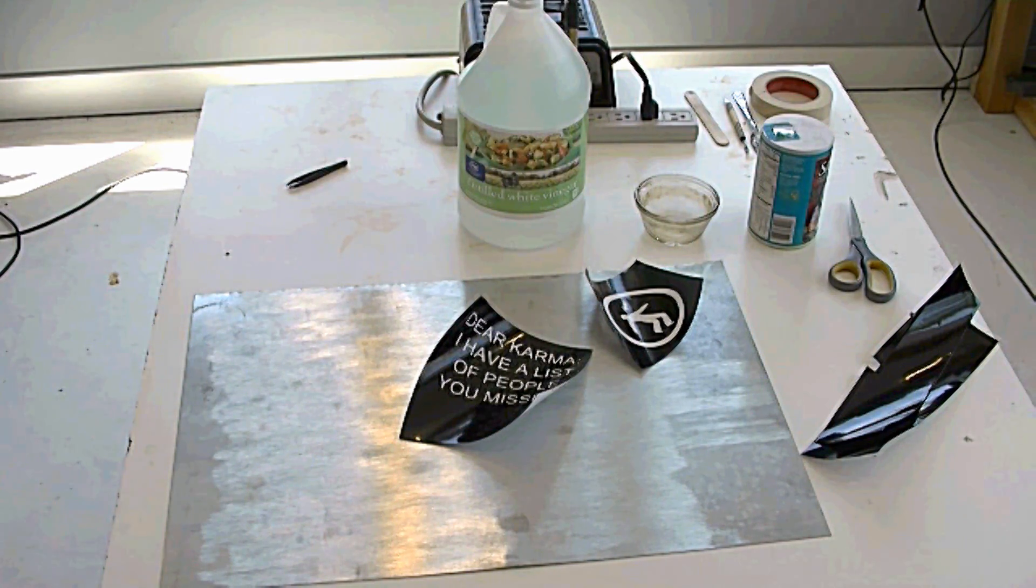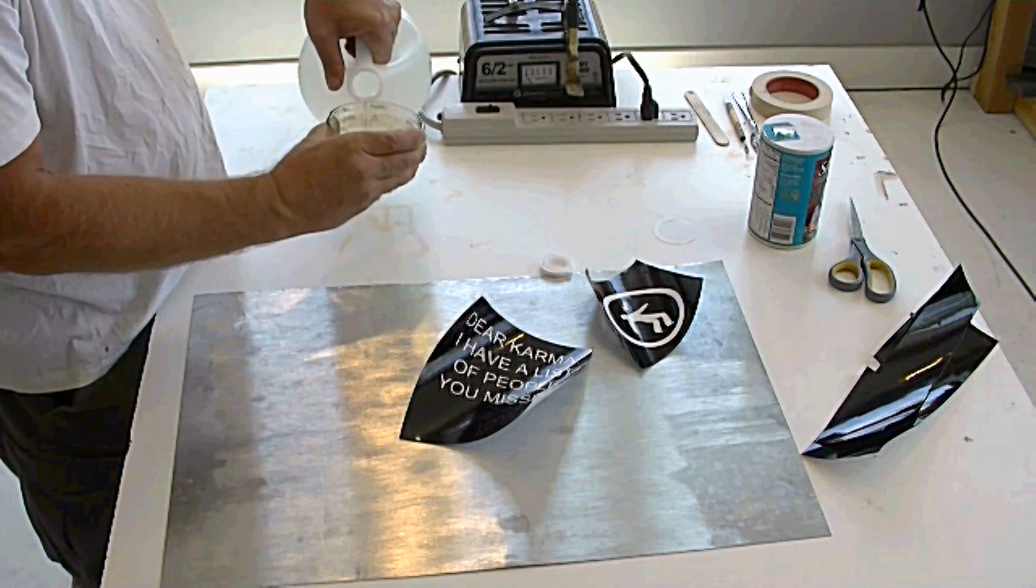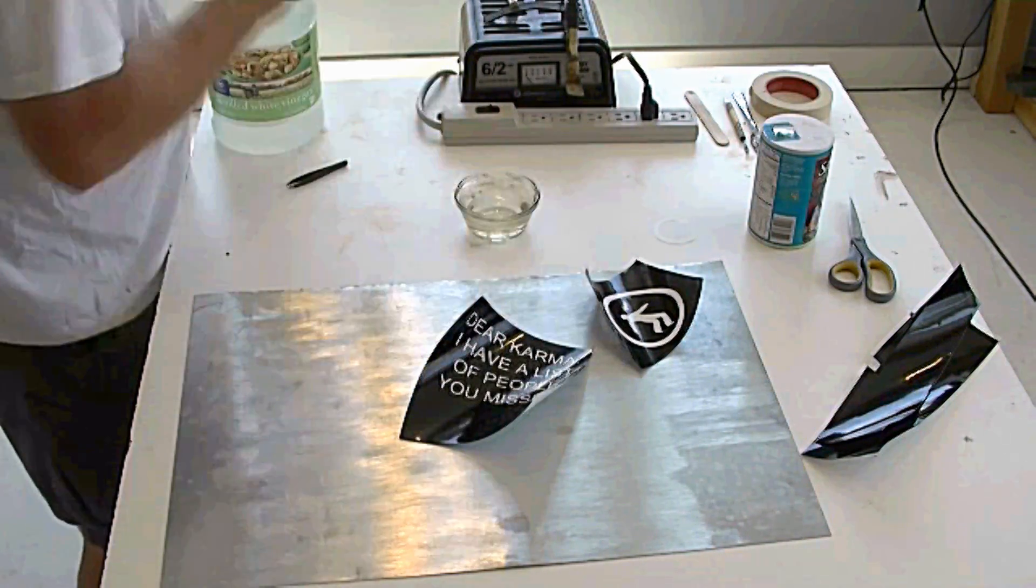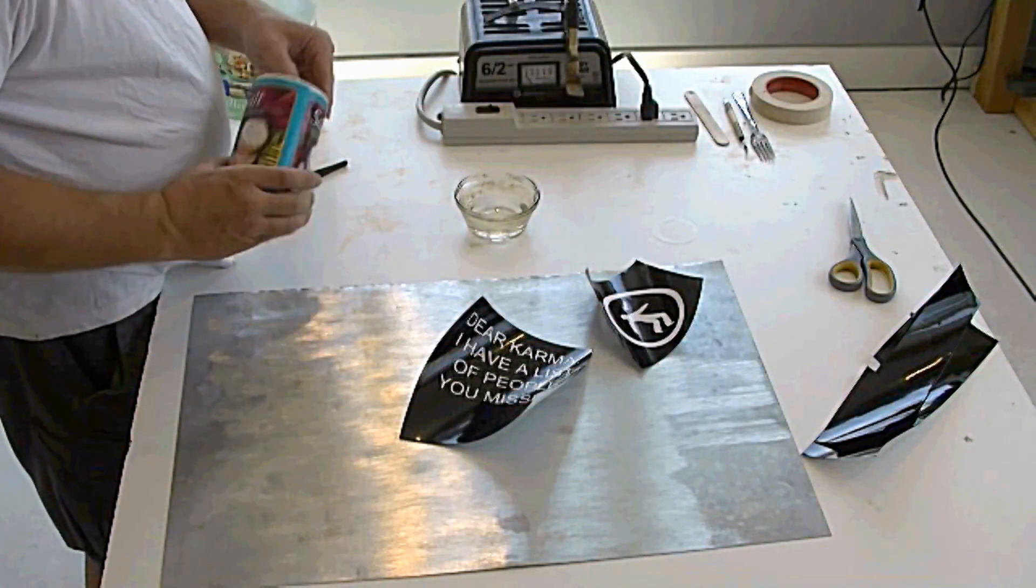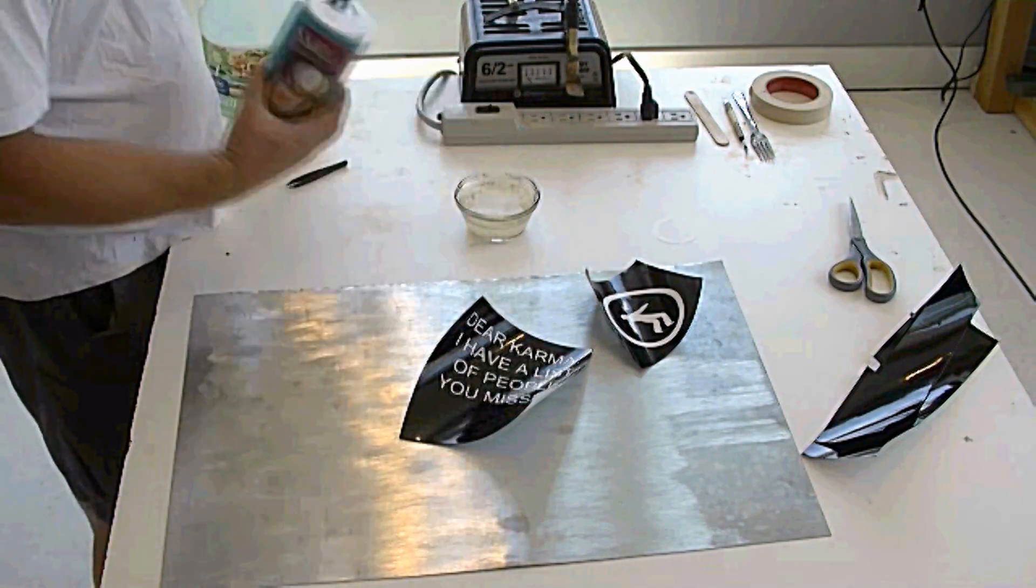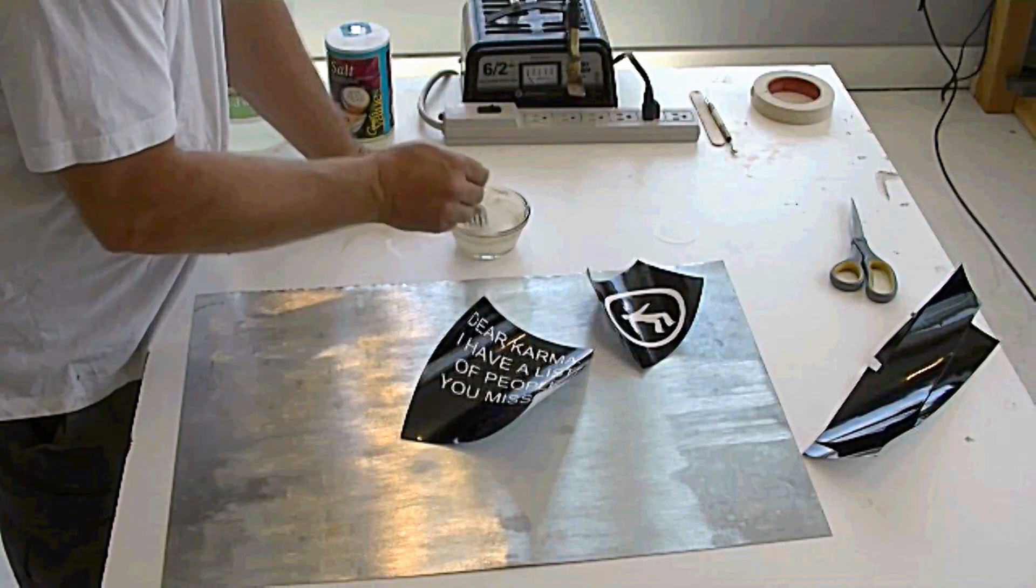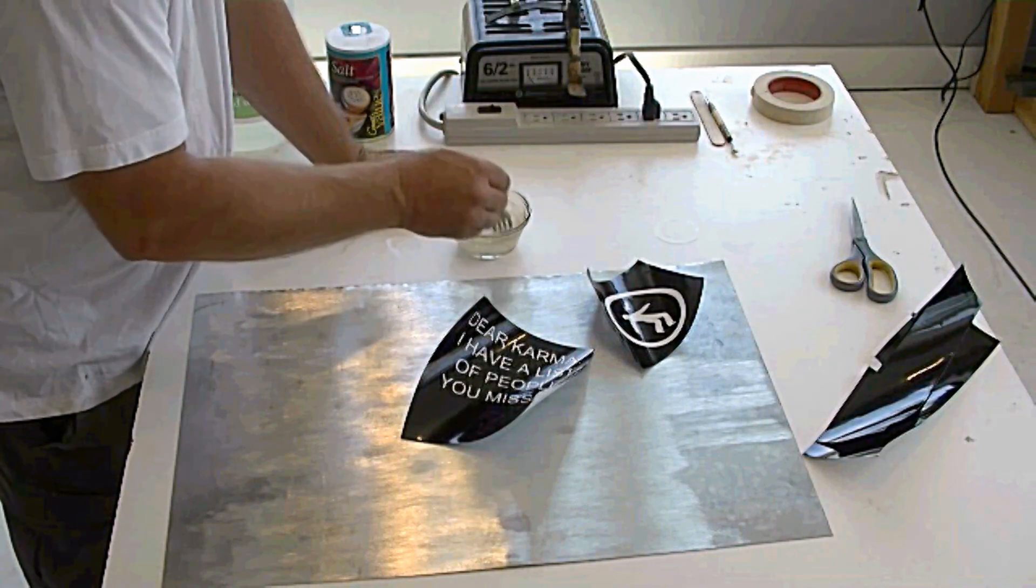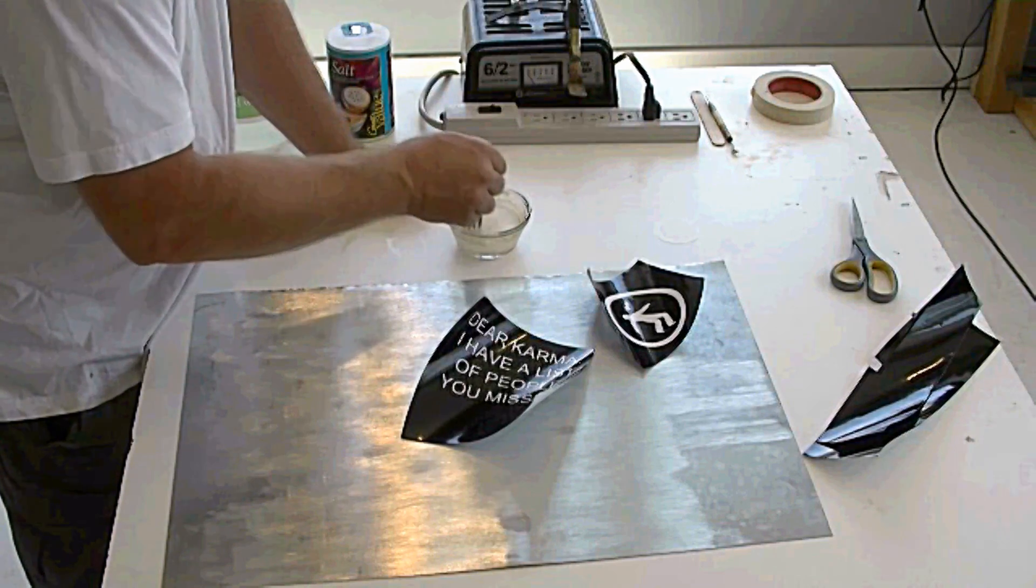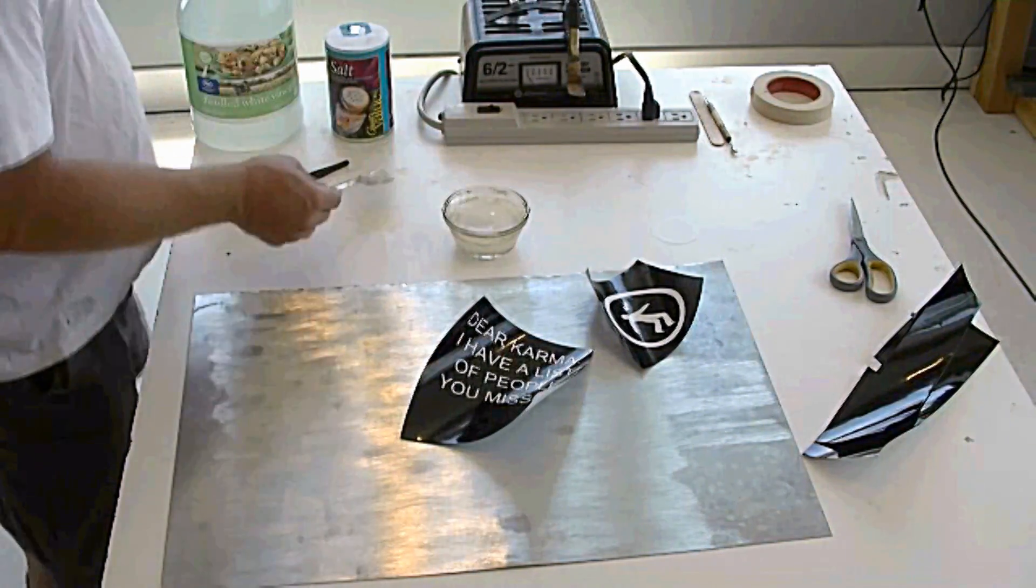This is white vinegar and I'm just pouring an amount, no specific amount in there, just probably half or less, and salt, just standard table salt. I'm just dumping some in. Again, I don't measure it. I just want to be sure it's salty and I do what I can to mix it up and have it dissolve in the vinegar here and get that part started.